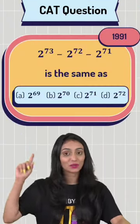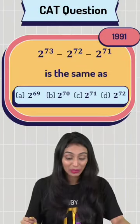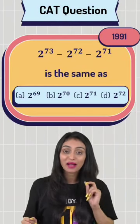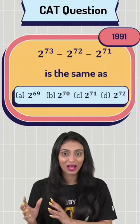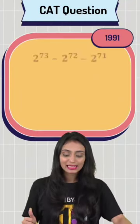So here we have a question that was asked in 1991 CAT paper. 2 to the power 73 minus 2 to the power 72 minus 2 to the power 71 is the same as. You can see four options over here. Let's see how we can solve this.